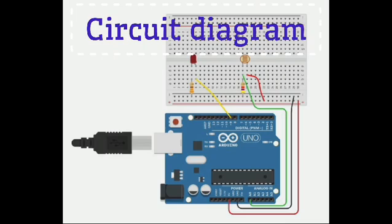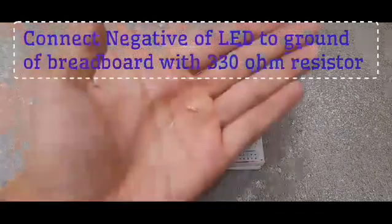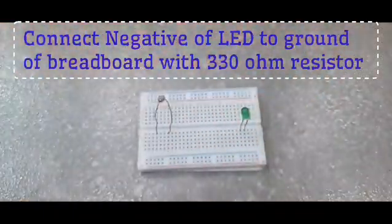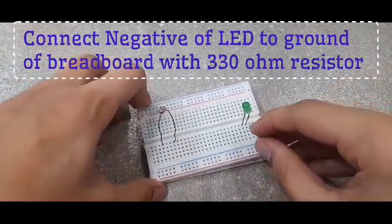This is the circuit diagram. I will also be doing the connection step by step. Alright everyone, first you will take your 330 ohm resistor and connect it to the negative of LED. The other end will go to the ground of breadboard.